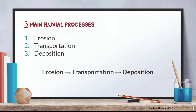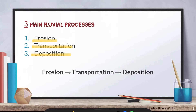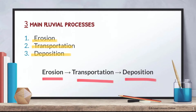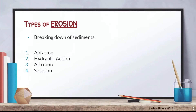There are three main fluvial processes you need to know for this syllabus: erosion, transportation, and deposition. The process always flows in that order — erosion, then transportation, then deposition. Your sediments must first be eroded before they can be transported, and after being transported they will be deposited somewhere.